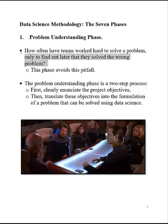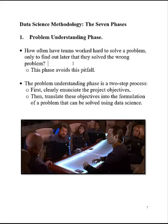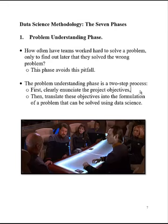How often have you seen this at work — how often have teams worked hard to solve a problem, only to find out later that they solved the wrong problem? This phase avoids that pitfall. You do that in a two-step process: first you clearly enunciate the project objectives. You get together with a team — you'll be with all kinds of different people from different departments, management, marketing, sales — and these people speak different languages. So it's so important to get down on paper exactly what they want, exactly what the project objectives are.